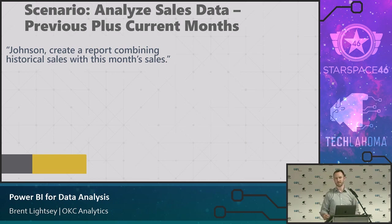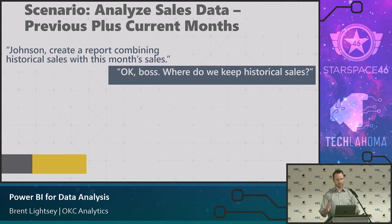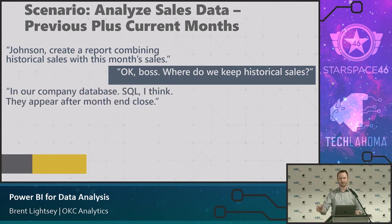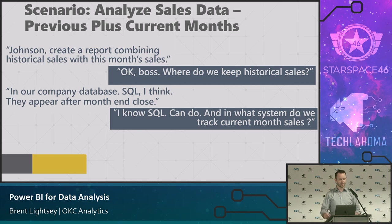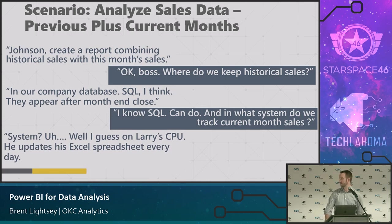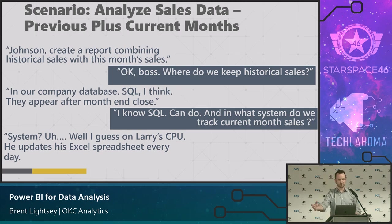You ask where historical sales are kept and your boss says 'it's in our company database, SQL something, clean and accurate after month close, accounting signed off.' Great — you know SQL. Then you ask about current month sales, and they say it's on Larry's CPU. Larry just updates his Excel spreadsheet every day. So now you're thinking: how am I going to get data out of a SQL database and off someone's desktop and combine it into a sensible report?